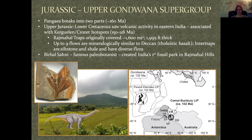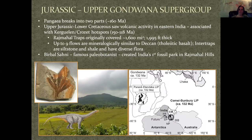That picture — I think it's a fern — was found in one of the intertrap beds. Birbal Sahni, a very famous paleobotanist, decided this area was worthwhile and created India's first fossil park. And then that little dinosaur — I just put him in there for fun — he's a Jurassic-aged sauropod, Barapasaurus, I believe.